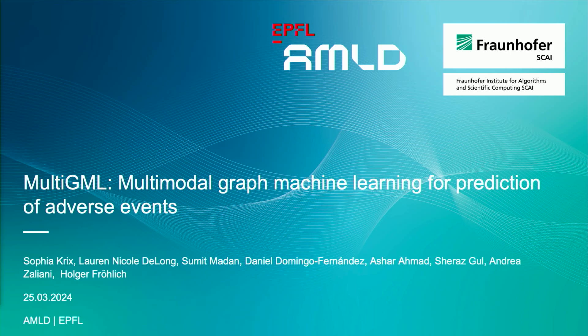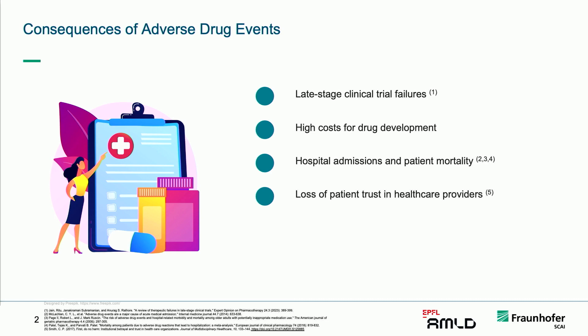We use an approach called Multi-GML, which is a graph machine learning based approach for the prediction of adverse events. Adverse drug events, if you haven't heard of them, are unwanted and harmful side effects of a drug, and they can have really considerable economic and clinical costs. Usually late-stage clinical trials fail because of one main reason: adverse events that are unforeseen and occur in this late stage, leading to high costs in the whole drug development process.